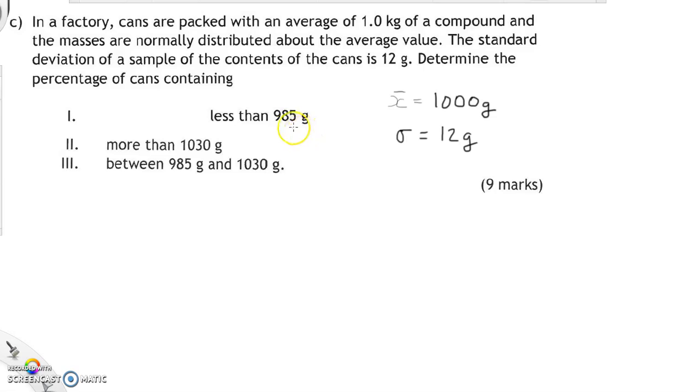Determine the percentage of cans containing less than 985 grams. That's our mean. Straight away 50% of cans are going to be less than the mean. 50% will be less than our mean, and 50% are greater than the mean. 985 is more than one standard deviation below the mean, because one standard deviation below the mean would occur at about 988 grams. That would be equal to x bar minus 1 times sigma.